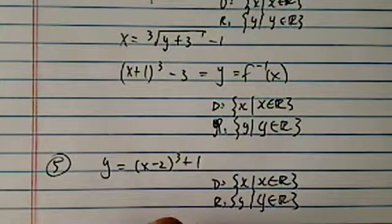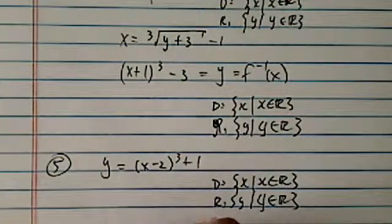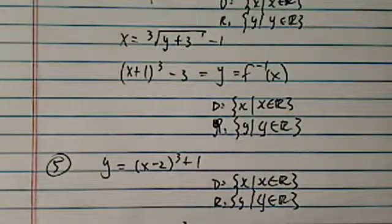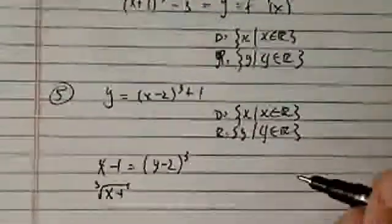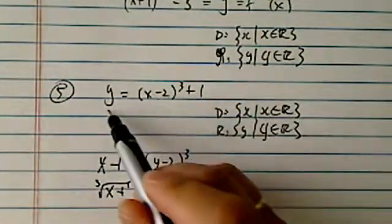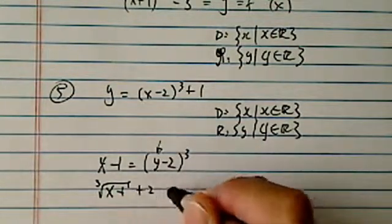Let's solve for inverse. So I have x minus 1 equal to y minus 2 cubed. I'm solving for y, so I have cubic root of x minus 1. So I swapped here. I already swapped x and y over here, and I'm solving for y now.